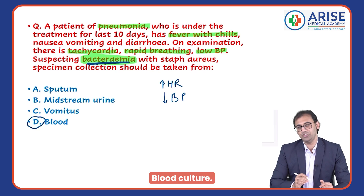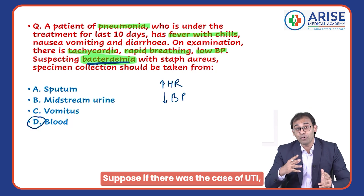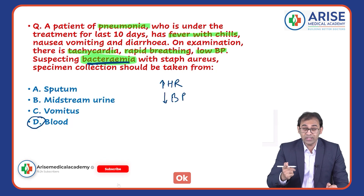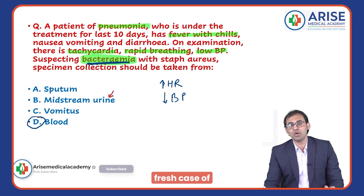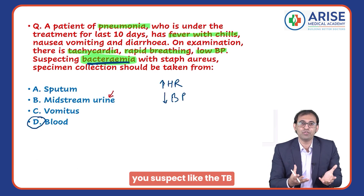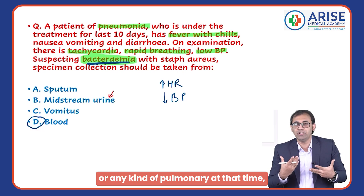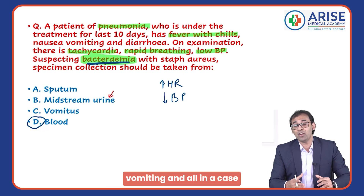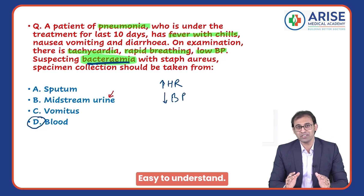Blood culture — the answer is D. If it were a case of UTI, you would collect the sample from urine. If you suspect TB or any pulmonary condition, you do a sputum test. In a case of food poisoning, you collect vomiting samples.